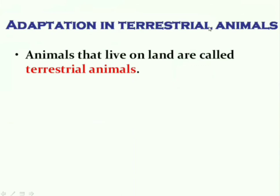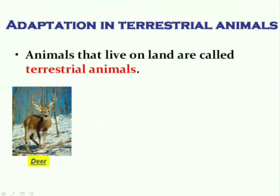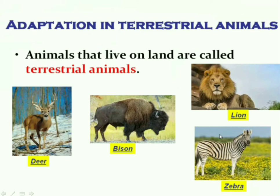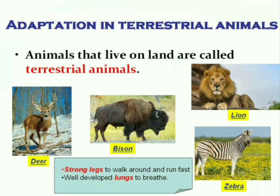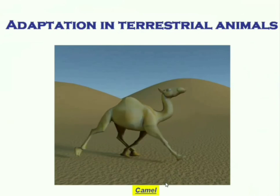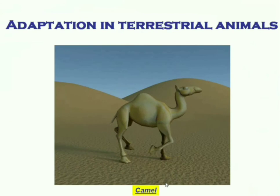Animals that live on land are called terrestrial animals — for example, deer, bison, lion, and zebra. These terrestrial animals have strong legs to walk around and run fast, and they also have well-developed lungs to breathe. Terrestrial animals like the camel live in desert areas where food and water are not easily available.